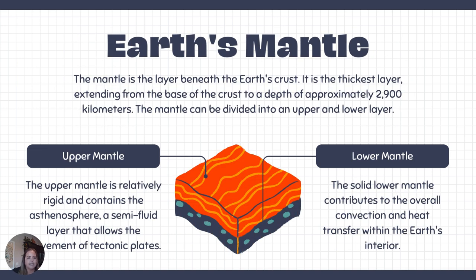Looking at the Earth's mantle, the upper mantle just after the crust is relatively rigid. It also contains the asthenosphere, which is a semi-fluid layer that allows movement of the tectonic plates. The lower mantle is solid and contributes to the overall convection and heat transfer within the Earth's interior. We need to understand these pieces to see how the rigid, hard crust can actually move.